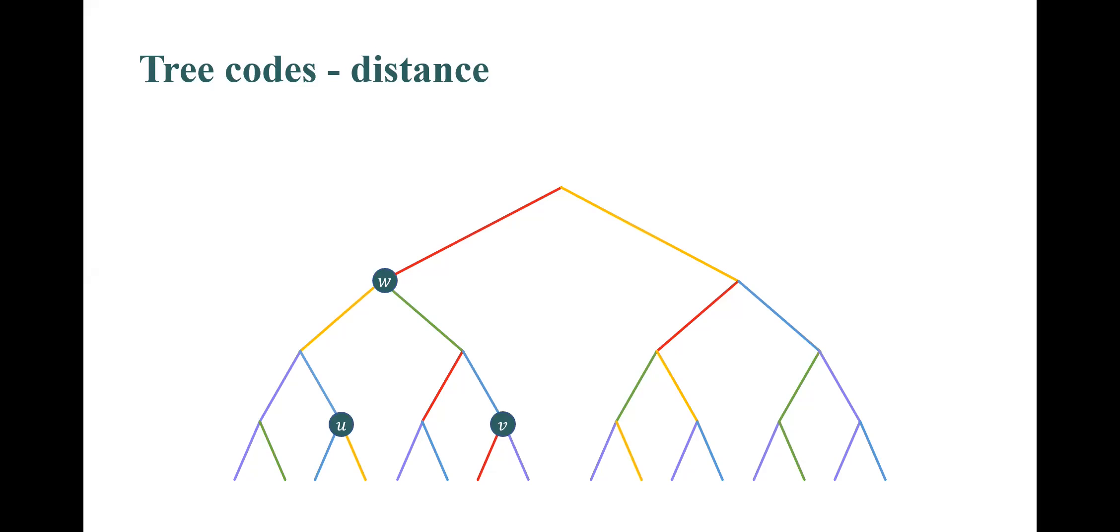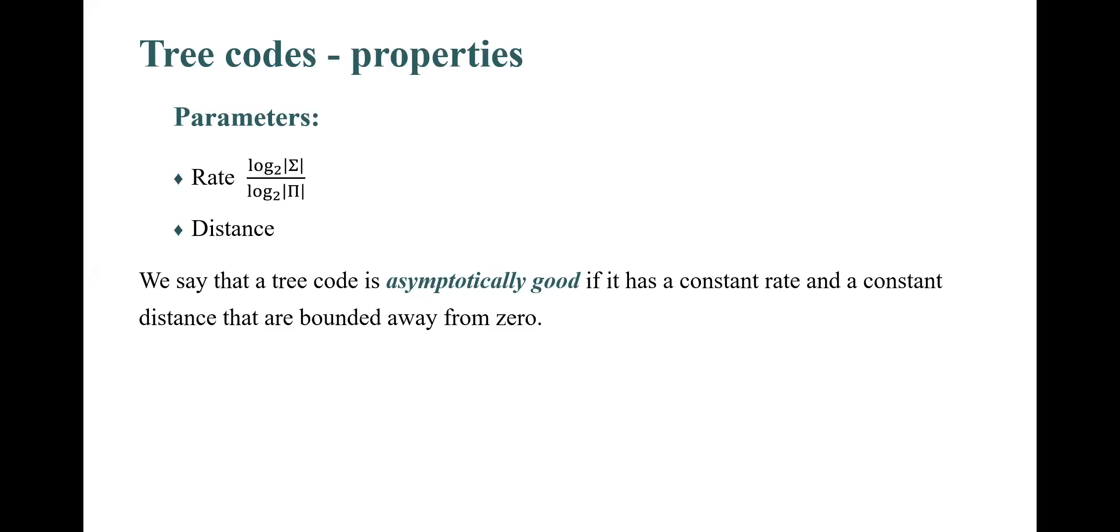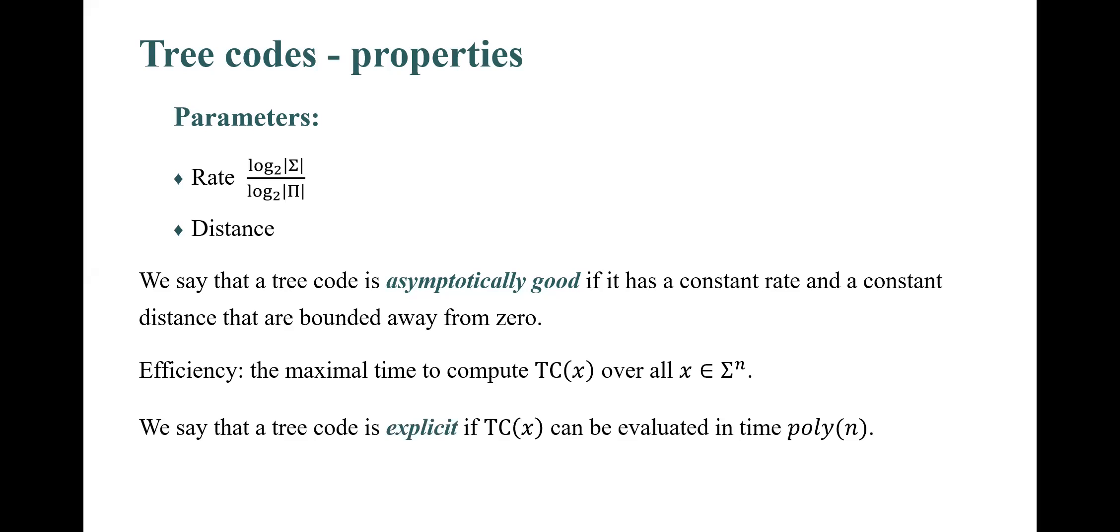This process is required to be done for any pair of vertices in the same depth. The distance of the tree is taken to be the minimum distance over all of its vertices. We say that a tree code is asymptotically good if it has a constant rate and a constant distance that are bounded away from zero. We also consider the efficiency of the tree code, that is, the maximum time it takes to compute the output of the tree code over all possible messages as a function of the length n. We say that the tree code is explicit if it can be evaluated in time poly n. And the last note is that every time we talk about the tree code, we have in mind a family of tree codes, one per depth n.